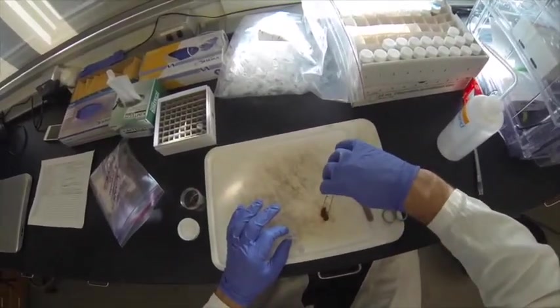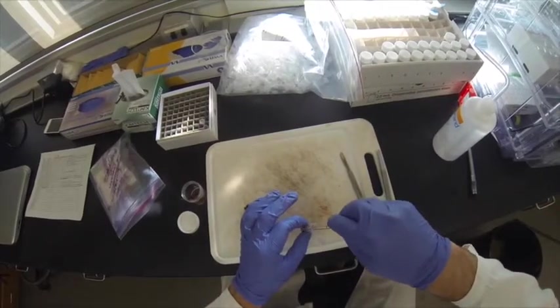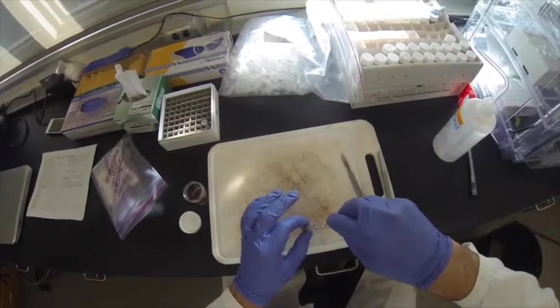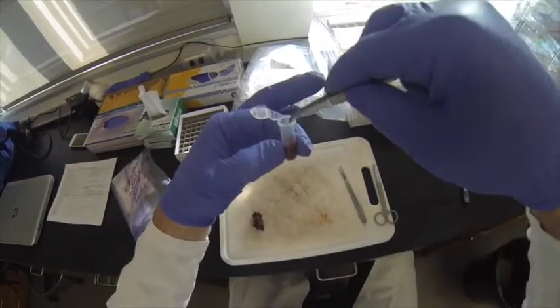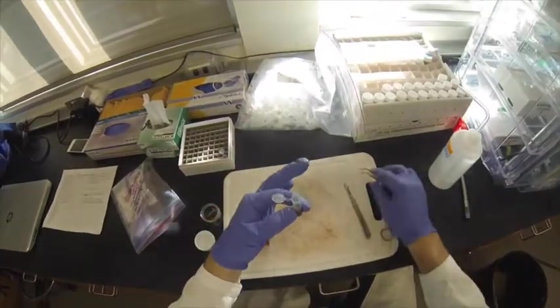The sample for a stable isotope analysis should consist of a microcentrifuge tube filled about halfway with muscle. The tube should be labeled with a fine-point marker on the lid and side with the sample ID number. Use tweezers to pack the sample into the tube. When packing the tube, avoid leaving air pockets underneath the sample as they may expand and force the sample out of the tube during freeze drying.